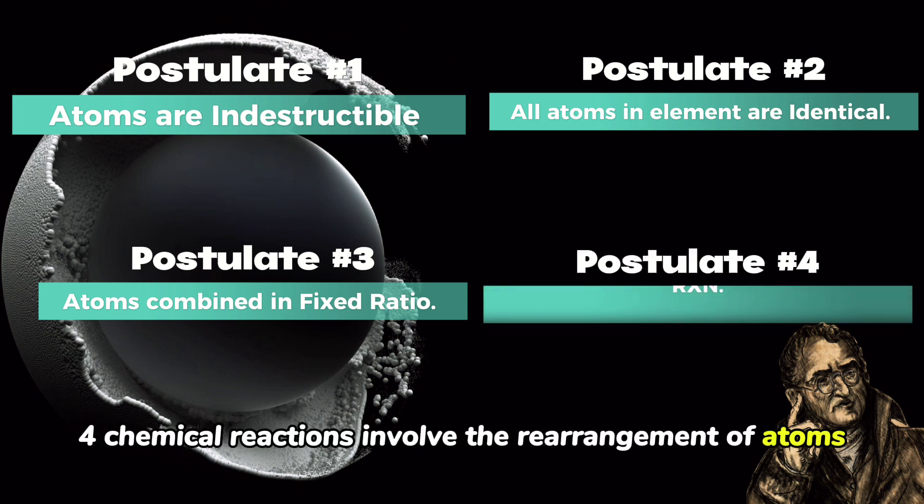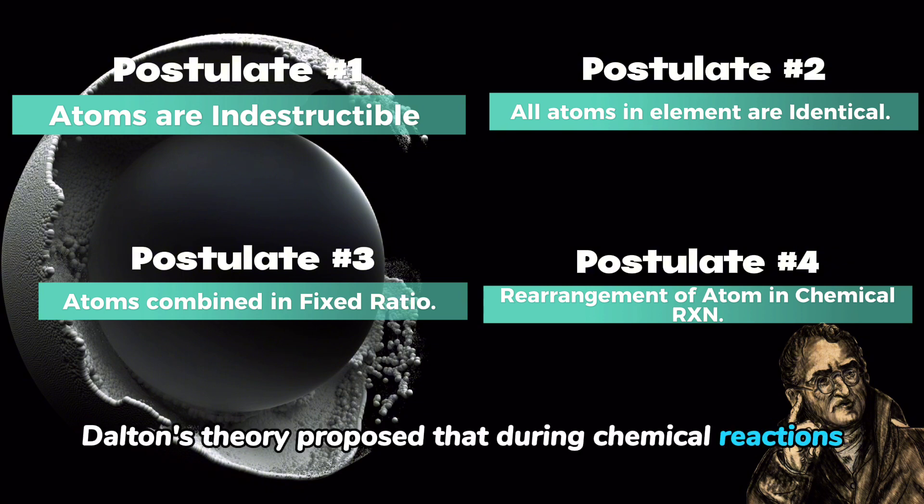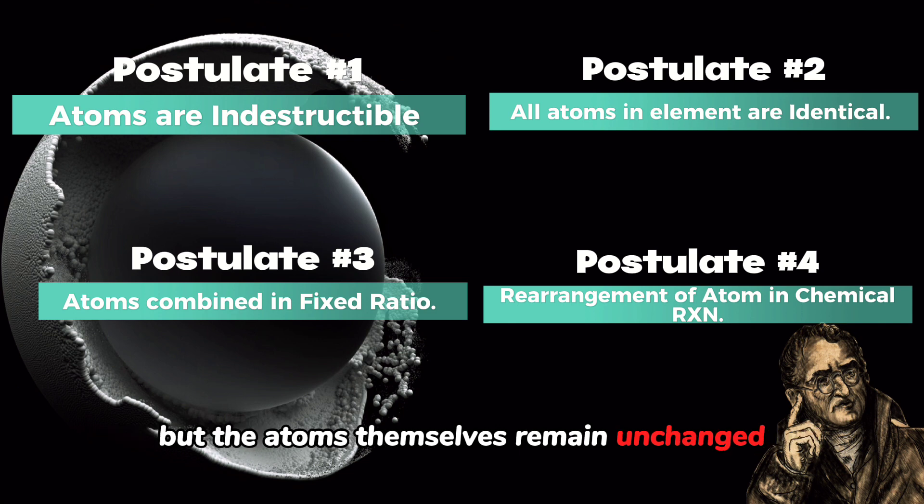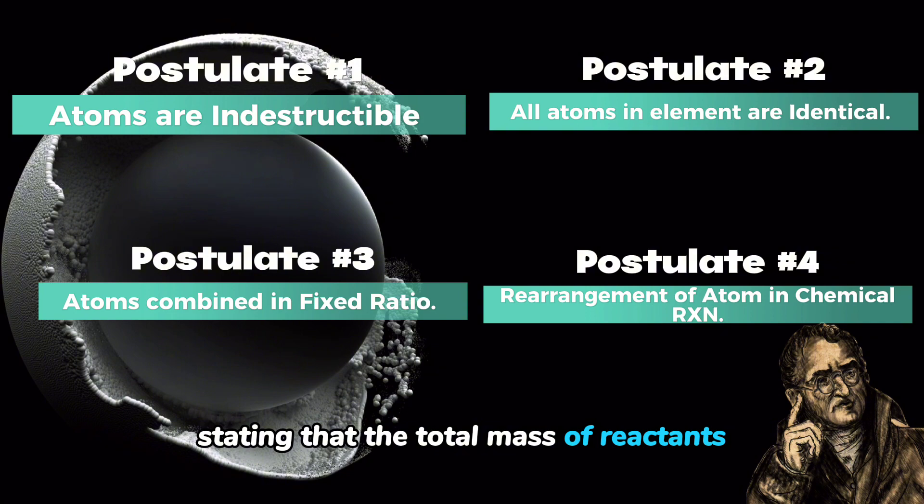Postulate 4: Chemical reactions involve the rearrangement of atoms. Dalton's theory proposed that during chemical reactions, atoms rearrange themselves to form new compounds, but the atoms themselves remain unchanged. This postulate is at the heart of the law of conservation of mass, stating that the total mass of reactants equals the total mass of products in a chemical reaction.